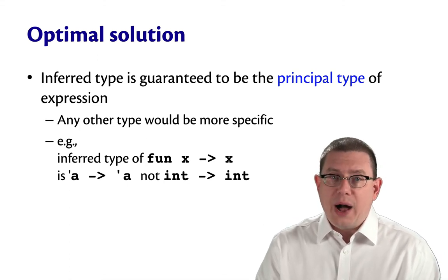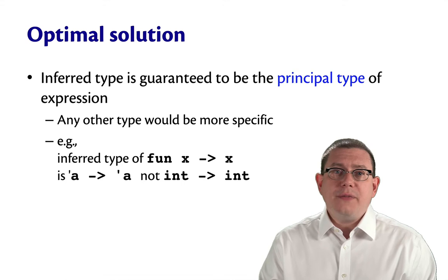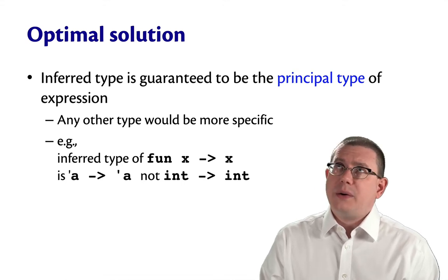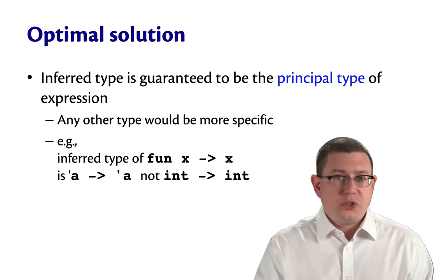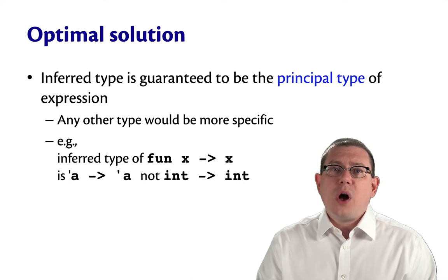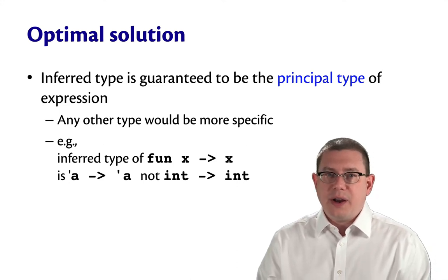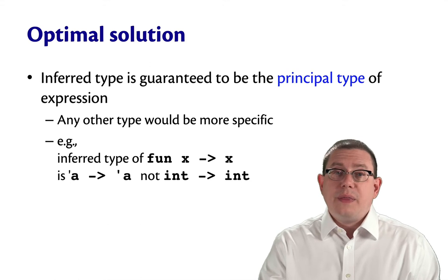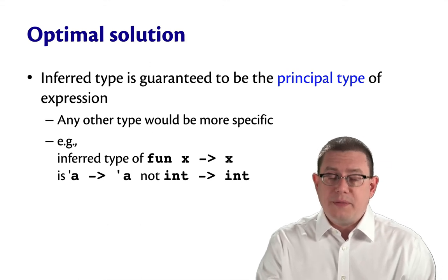We want it to be alpha arrow alpha. Now, of course, you could give it other types. You could say that it has type int arrow int, or bool arrow bool, or string arrow string, or whatever. But all of those are more specific than the type alpha arrow alpha. That type is the principal type of the expression.